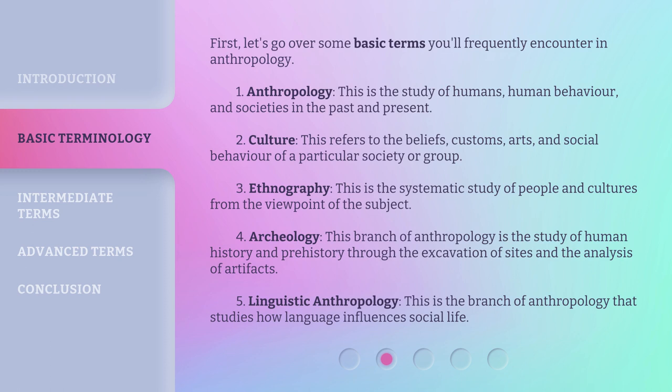3. Ethnography: This is the systematic study of people and cultures from the viewpoint of the subject. 4. Archaeology: This branch of anthropology is the study of human history and prehistory through the excavation of sites and the analysis of artifacts. 5. Linguistic Anthropology: This is the branch of anthropology that studies how language influences social life.